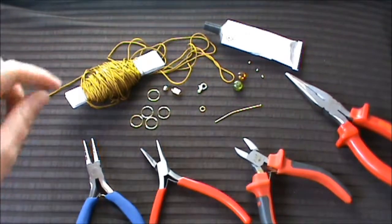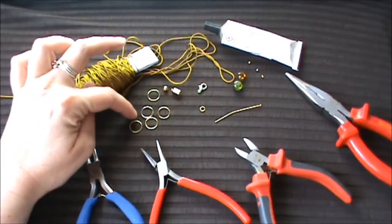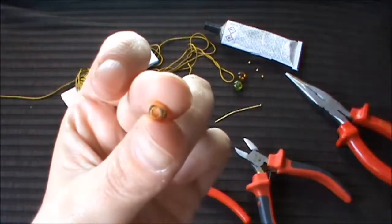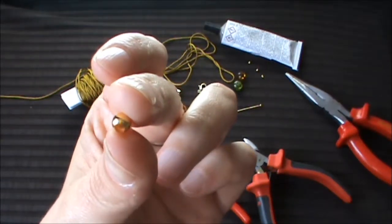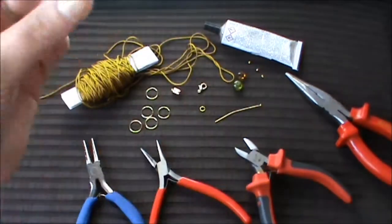For this project you will need nylon cord thread 1mm, 5 jump rings 10mm, and a big hole bead so you can thread through 4 of the strings of the nylon cord thread.